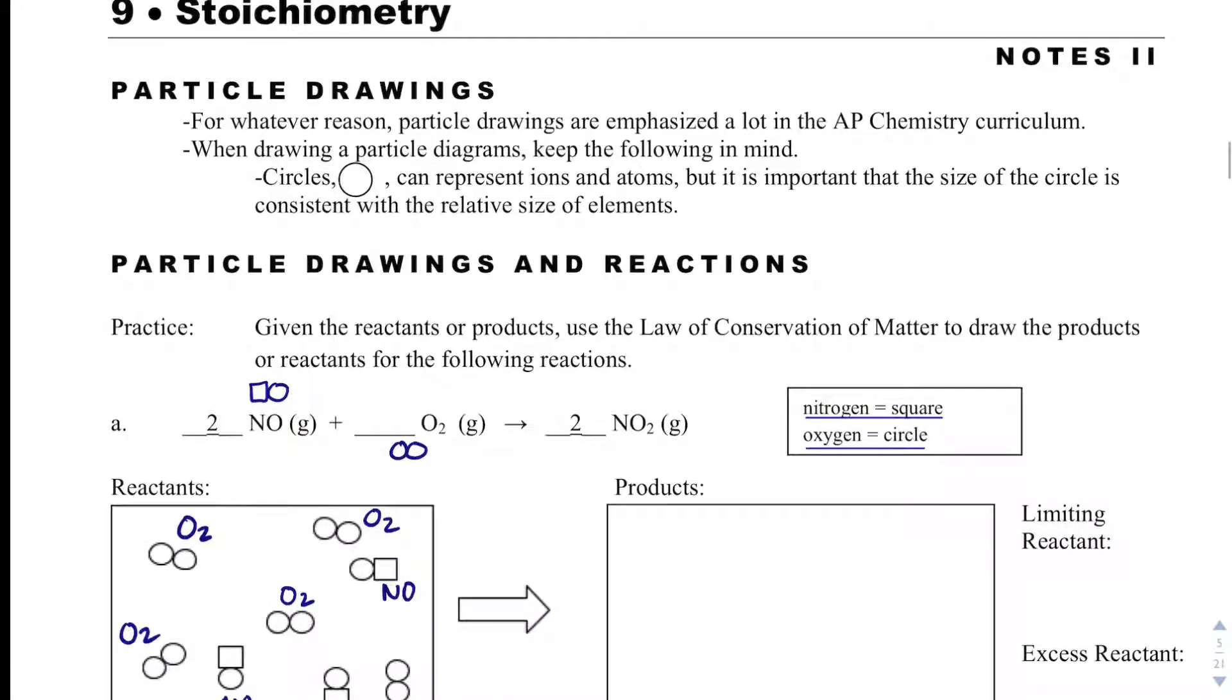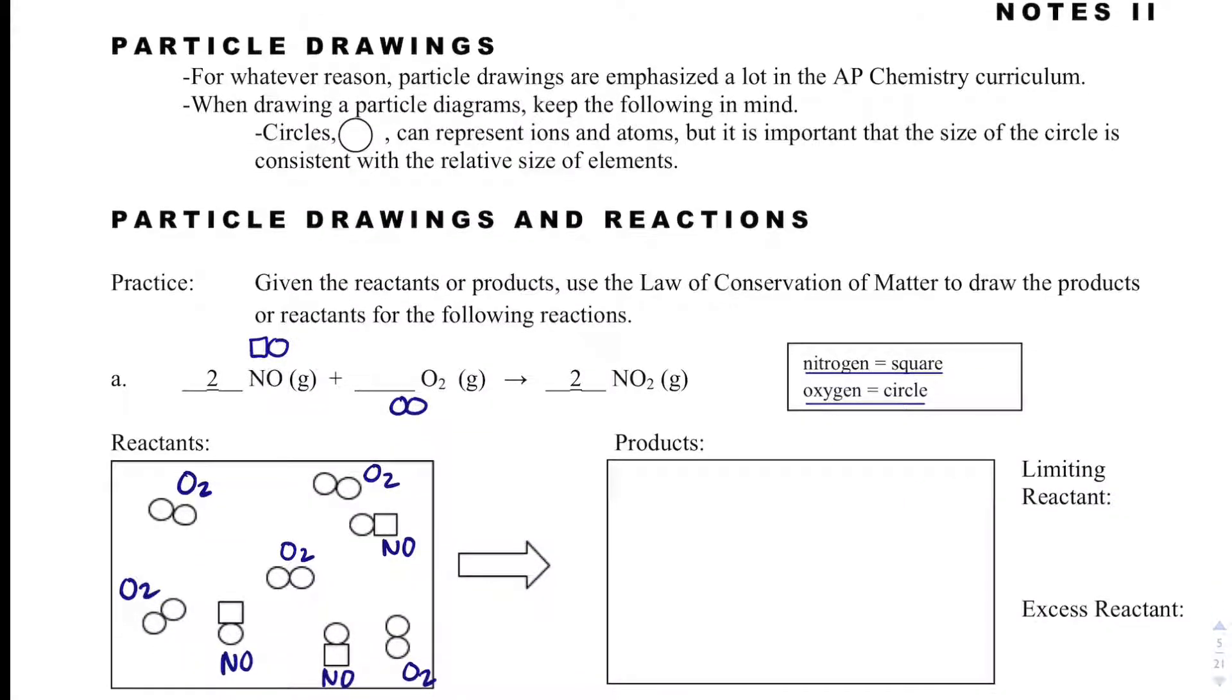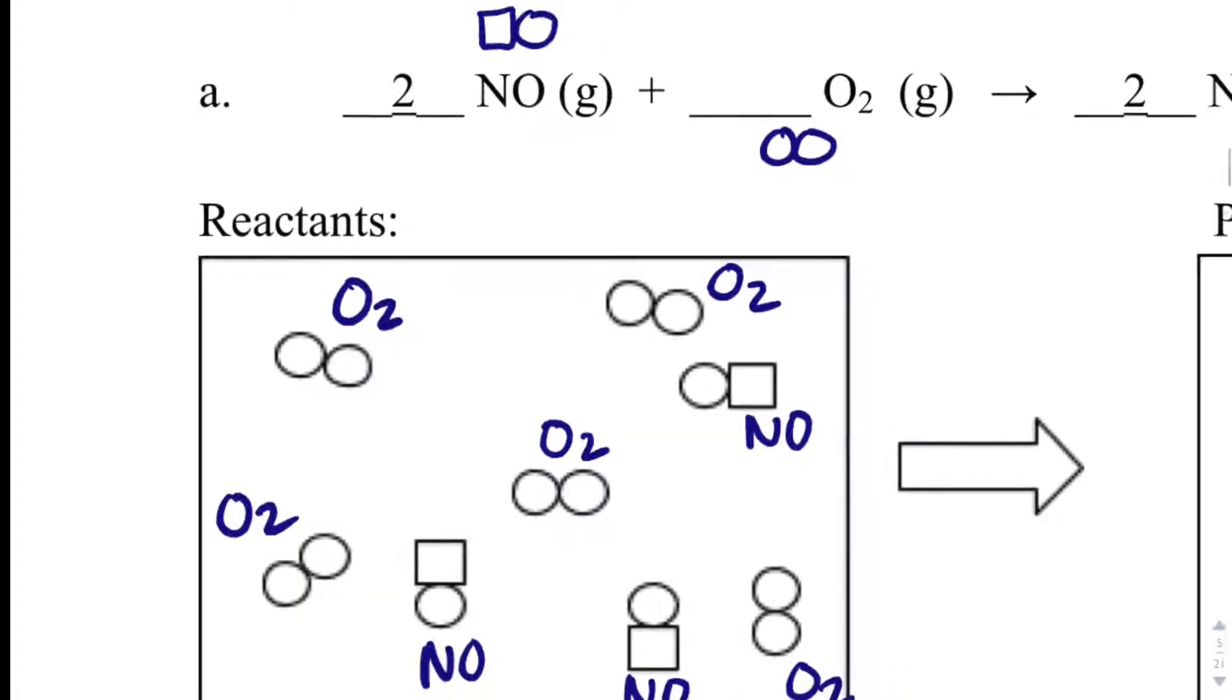Okay, and then what I'm going to do is I am going to go through rounds of the reaction. Here's what I mean by that. In every one round, I am using two NOs and one O2, and how do I know? That is just my coefficient. So let's go through round by round and see what we get.